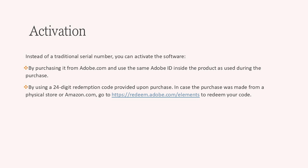Activation. Instead of a traditional serial number, you can activate the software by purchasing it from Adobe.com and using the same Adobe ID inside the product as used during the purchase. Or, by using a 24-digit redemption code provided upon purchase. In case the purchase was made from a physical store or Amazon.com, go to https://redeem.adobe.com/elements to redeem your code.